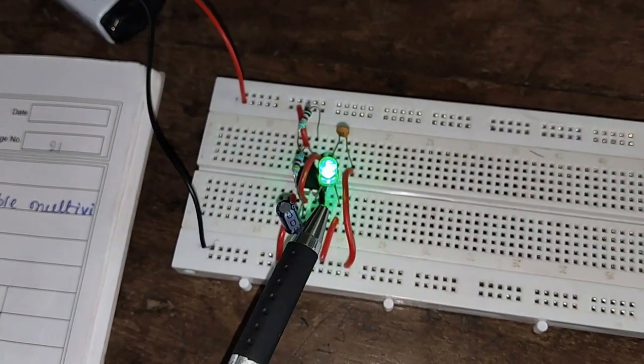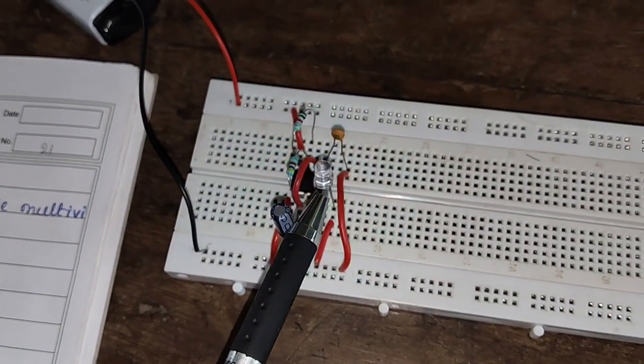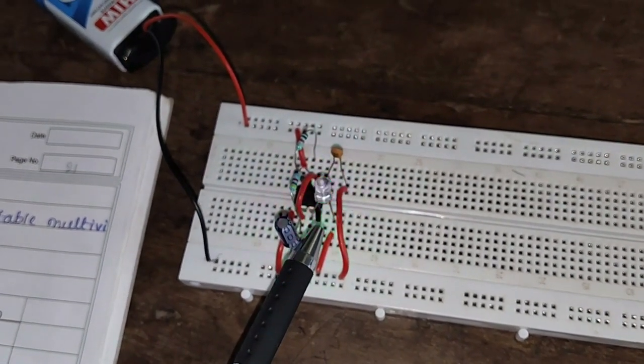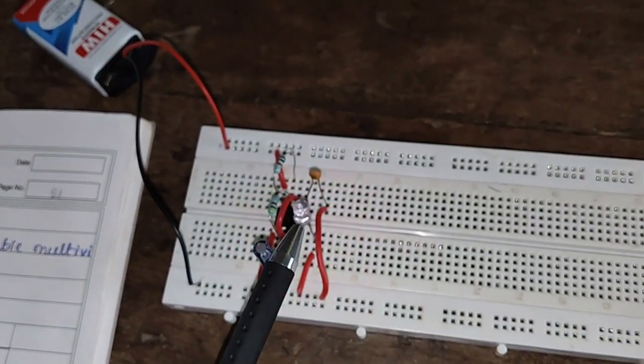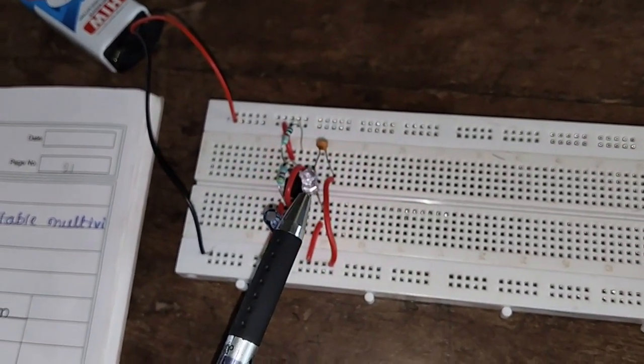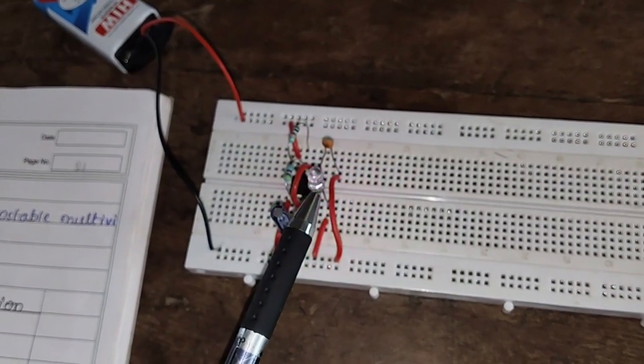Whenever we get T on at pin number 3, the LED gets on. And whenever we get T off at pin number 3, this LED gets off. We can also observe this waveform on the CRO.